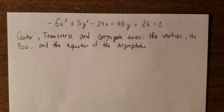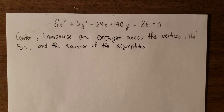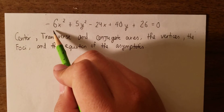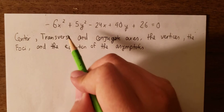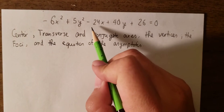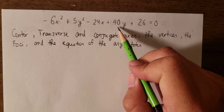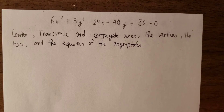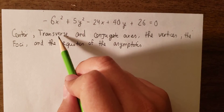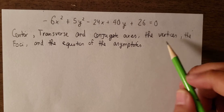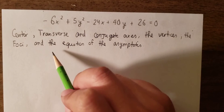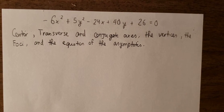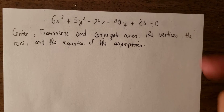Hello everybody. Today I will talk about the hyperbolic equation. I will use a real example: minus 6x² plus 5y² minus 24x plus 40y plus 26 equals 0. The question asks to find the center, find the transverse and conjugate axes, the vertices, the foci, and the equation of the asymptotes. I will show you the technique for how to do all of these.